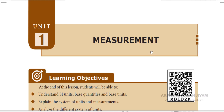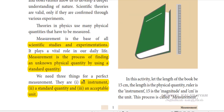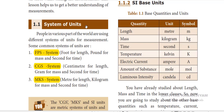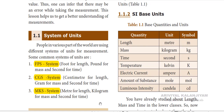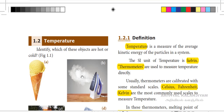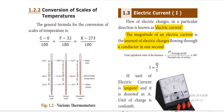Dear students, in this video we are going to see about the second part of the lesson measurement. In the first part of this video, we saw about what is physics and three important things used for the perfect measurement, types of system of units and seven components of SI base units, history of SI units, temperature and its meaning, types of thermometers and electric current.